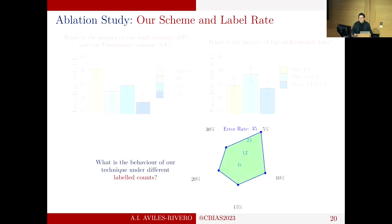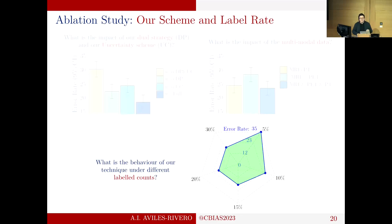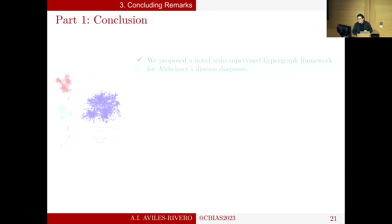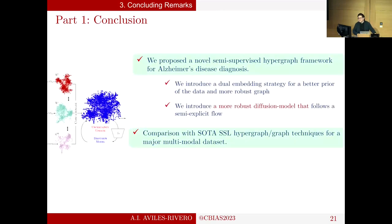Another question is: what happens when you increase the label rate beyond 15%? In the classic semi-supervised setting, as you add more labels you eventually reach a point where improvements plateau, because semi-supervised methods are designed to exploit unlabeled data — unlike supervised methods designed for labeled samples. So increasing the label set beyond a certain point loses the defining advantage of semi-supervised learning.